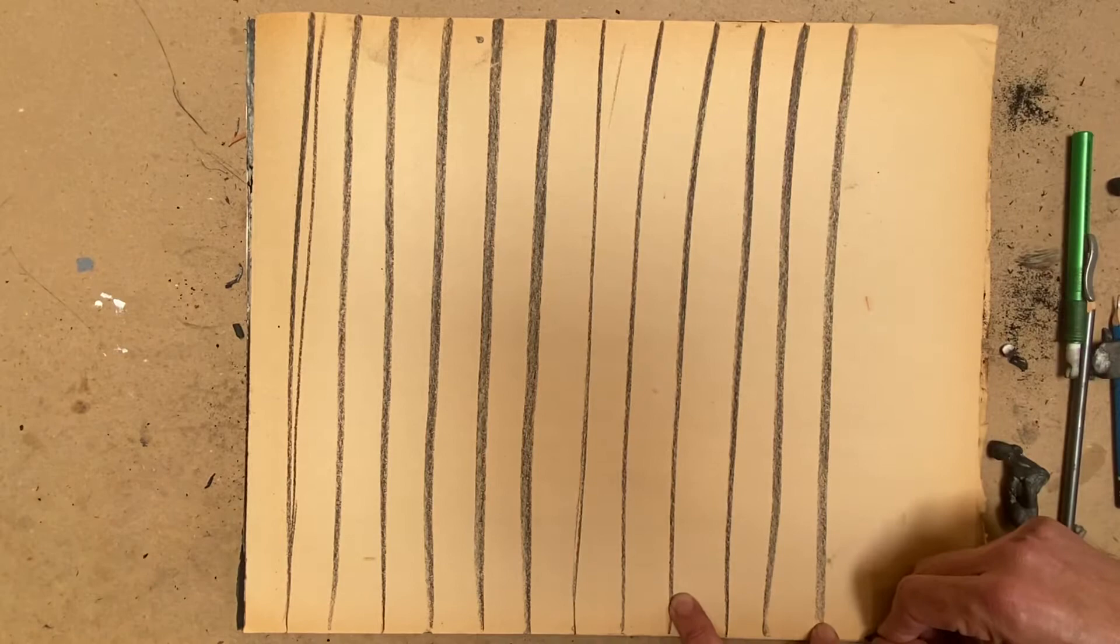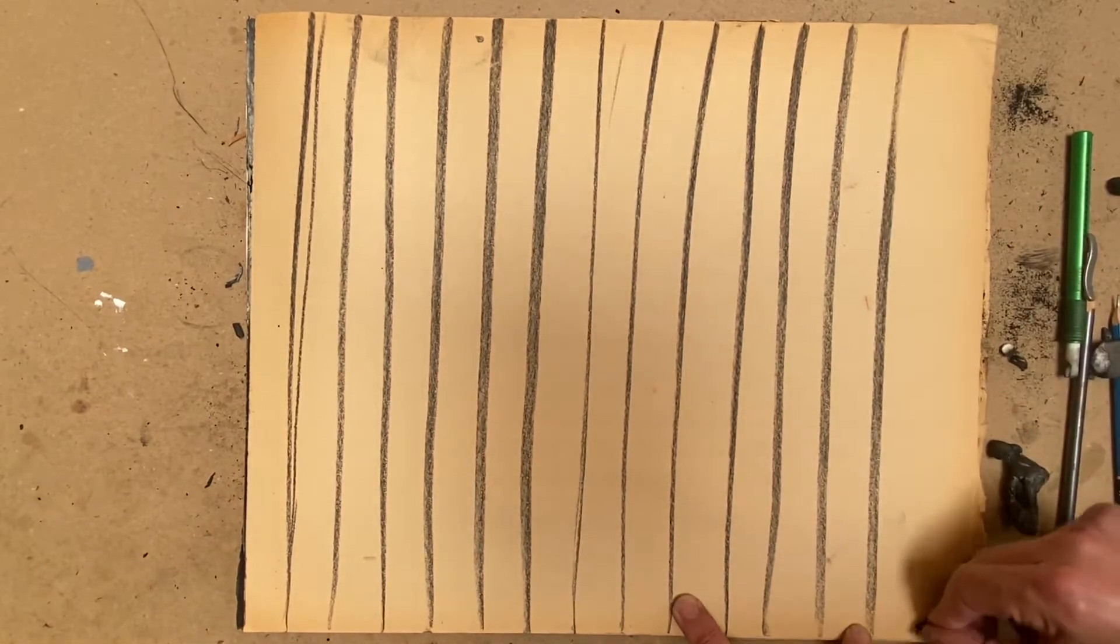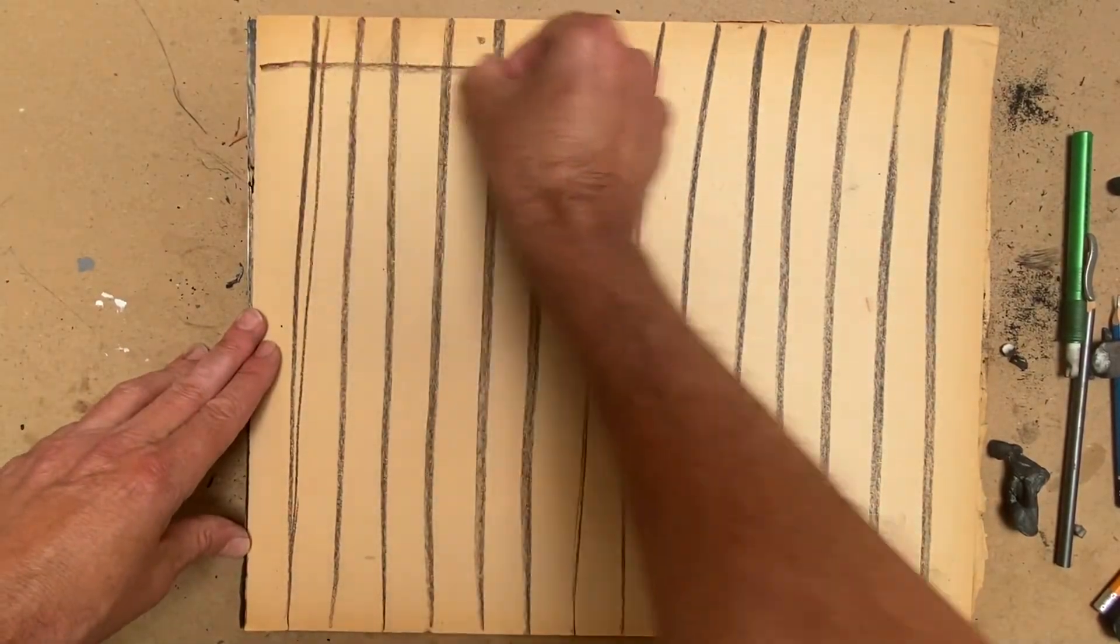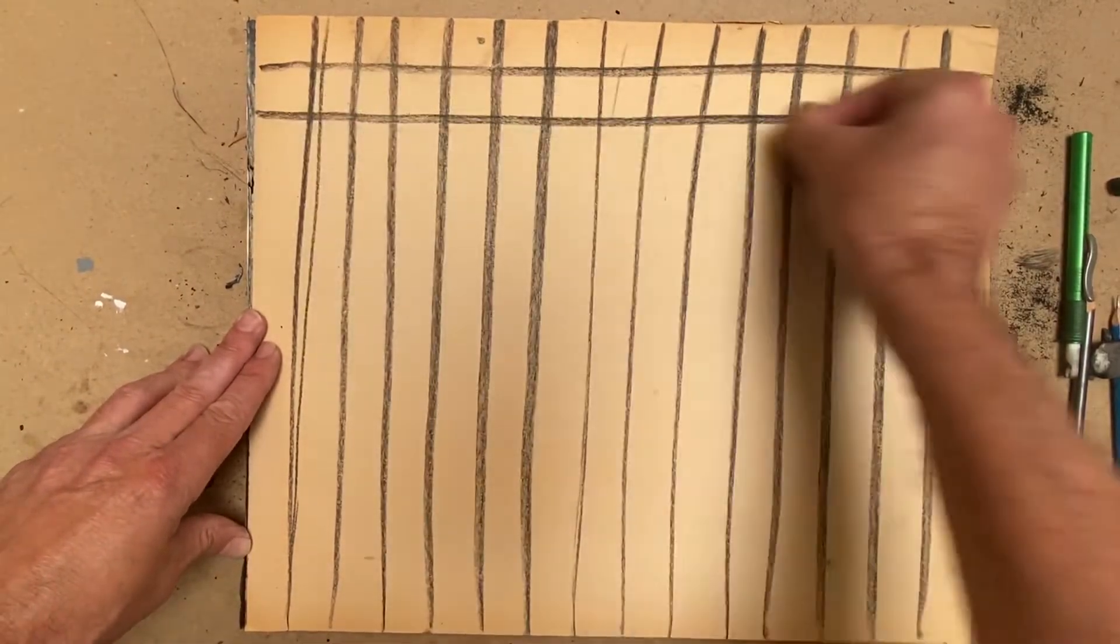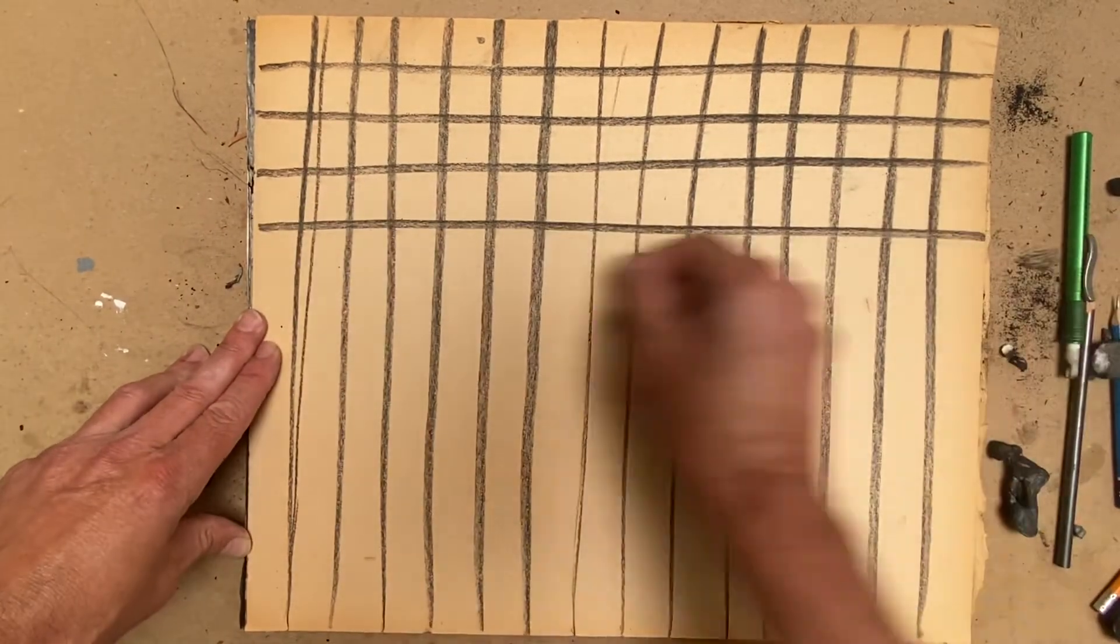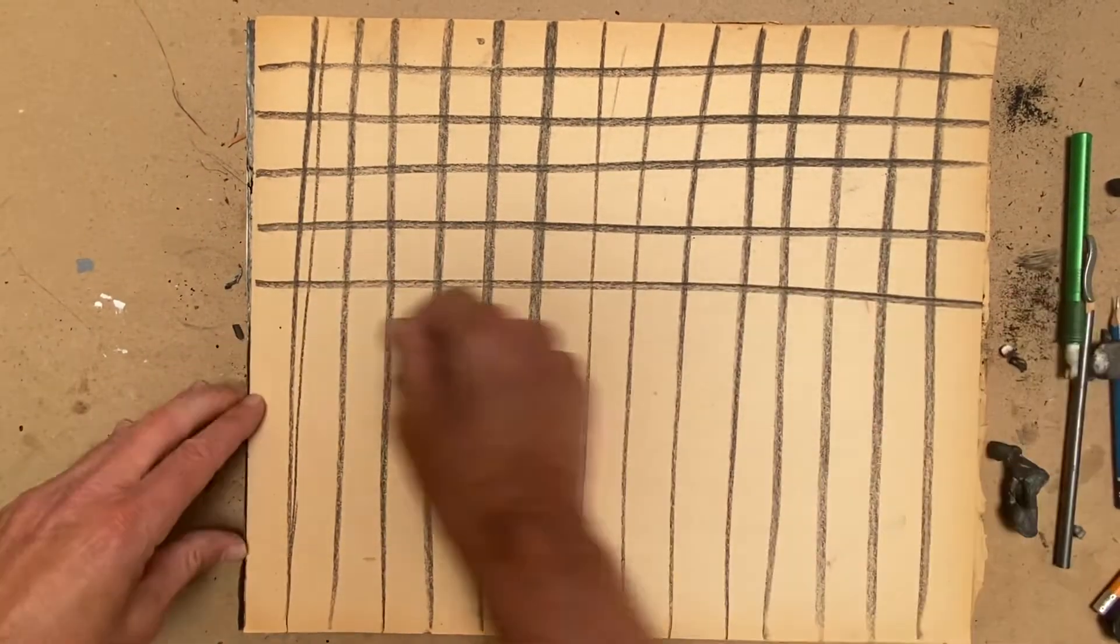So what I'm doing right now is I'm doing vertical lines across the horizontal part and now what I'm going to do is I'm going to do horizontal lines across the vertical part.